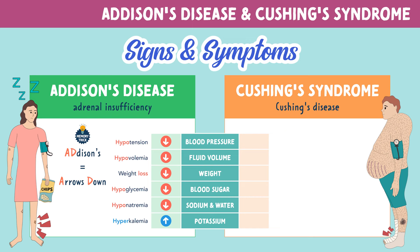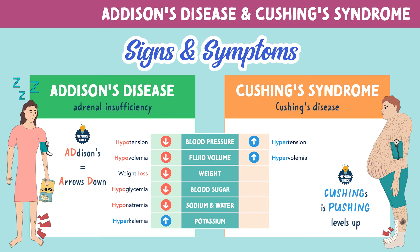A memory trick to remember Cushing's disease is that Cushing's is pushing levels up. So we're going to see hypertension, hypervolemia, truncal obesity, hyperglycemia, hypernatremia, and the outlier here is hypokalemia.